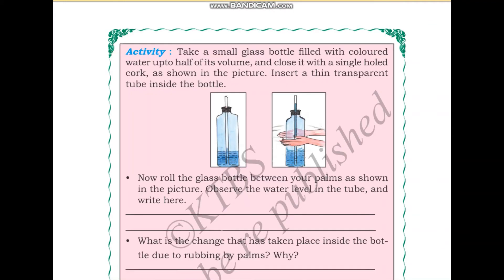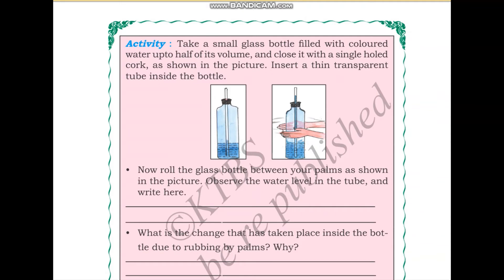Next, take a small glass bottle filled with colored water up to half its volume. Then close it with a single hole cork. What you are going to do is take a water bottle and then close it. Make a small hole in the cap.